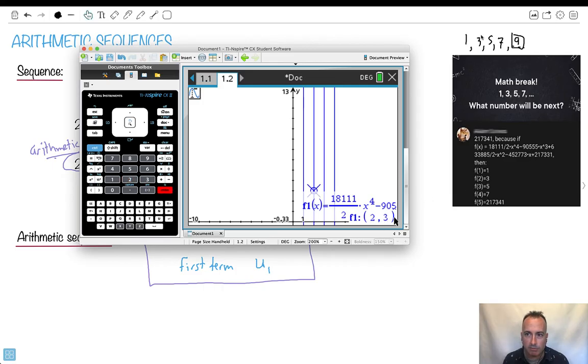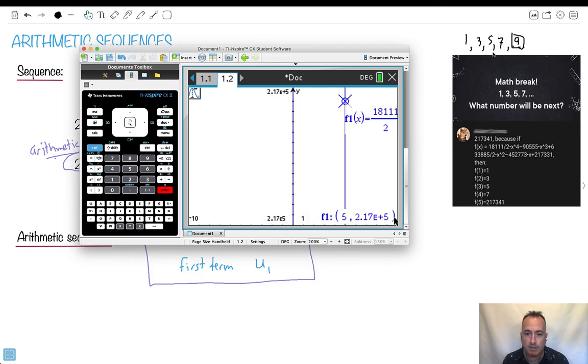So F of 1 is 1. How about when X equals 2, what do I get? Well, Y is 3. Okay, good. So far it works. The third term, let's say I put in 3. Third term is going to be 5. That works. The fourth term is going to be 7. That's great.